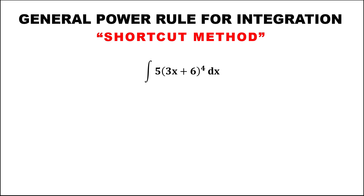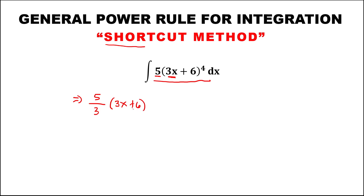For the general power rule for integration using the shortcut method, to evaluate the given integral, first put the constant outside, then over the derivative of the equation inside the parenthesis. The derivative of 3x is 3, then times the equation inside the parenthesis, so that's 3x plus 6.